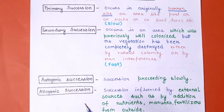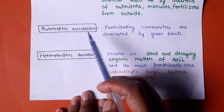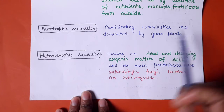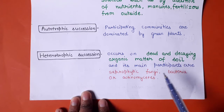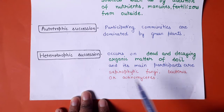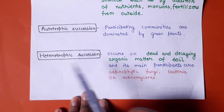When certain things are provided from outside to influence the process of succession, it is called allogenic succession. In autotrophic succession, the dominating communities are green plants. Heterotrophic succession involves dead and decaying organic matter of the soil, and the participants are mainly saprophytic fungi, bacteria, and actinomycetes. This type of succession dominated by heterotrophic components of the community is called heterotrophic succession.